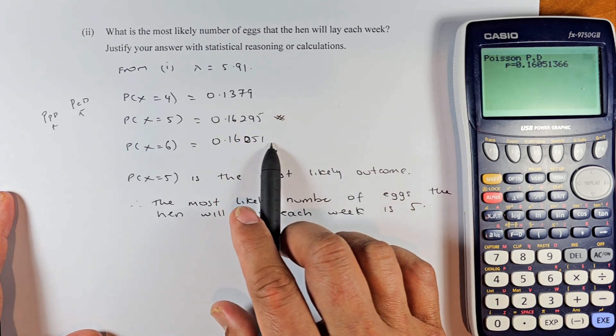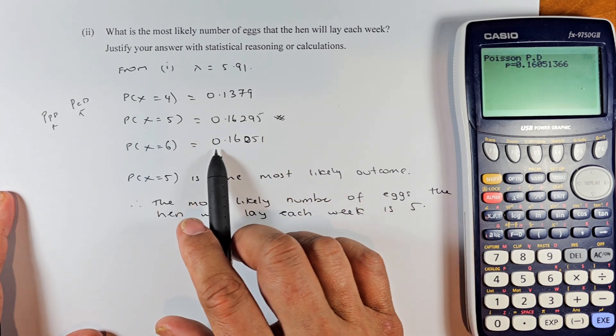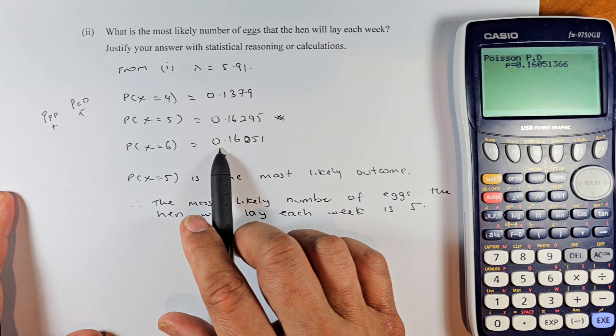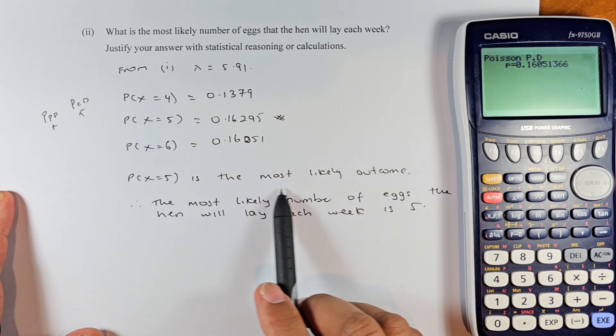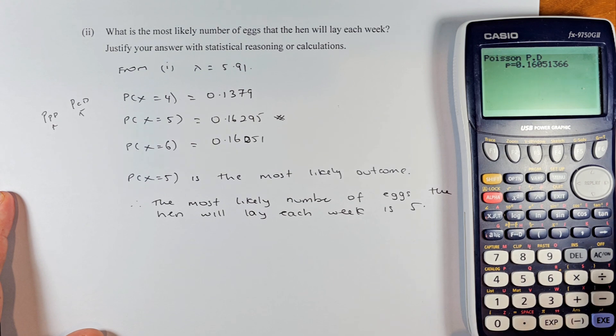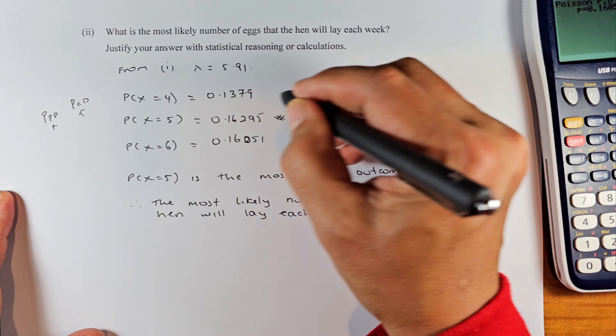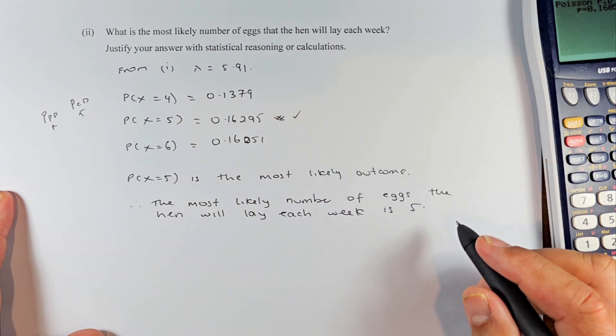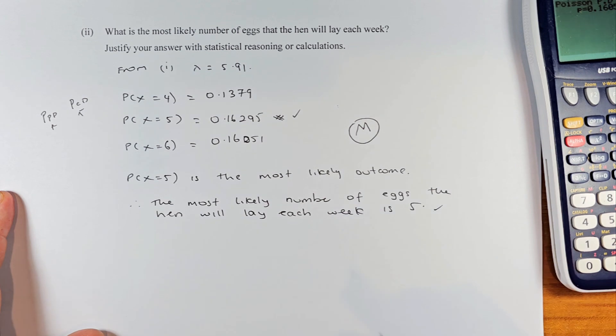Of these three numbers, x equals 5 is the biggest number, 0.16295, while x equals 6 is the second biggest, 0.16051. x equals 5 is the most likely outcome. To answer the question, the most likely number of eggs the hen will lay each week is 5 because that is the biggest probability. That is how you answer and that is the merit in this question.